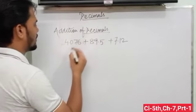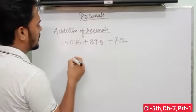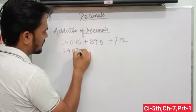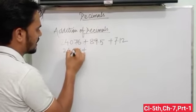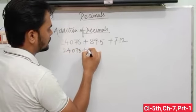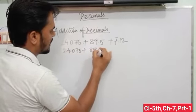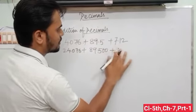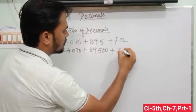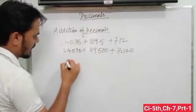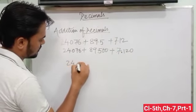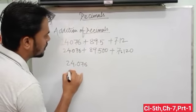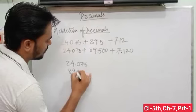First of all, we have to change into like decimals. So 24.076 - there are 3 digits, highest. So 89.500, 7.120, and 59.500.